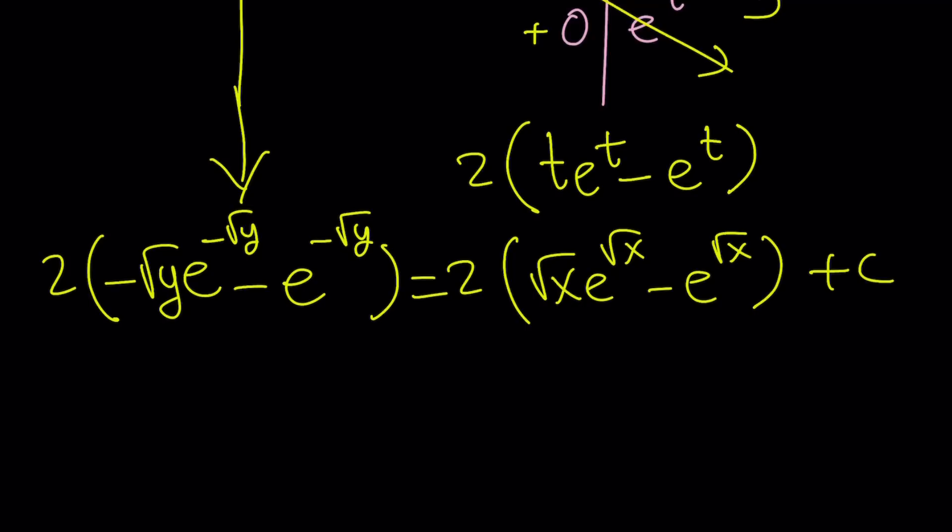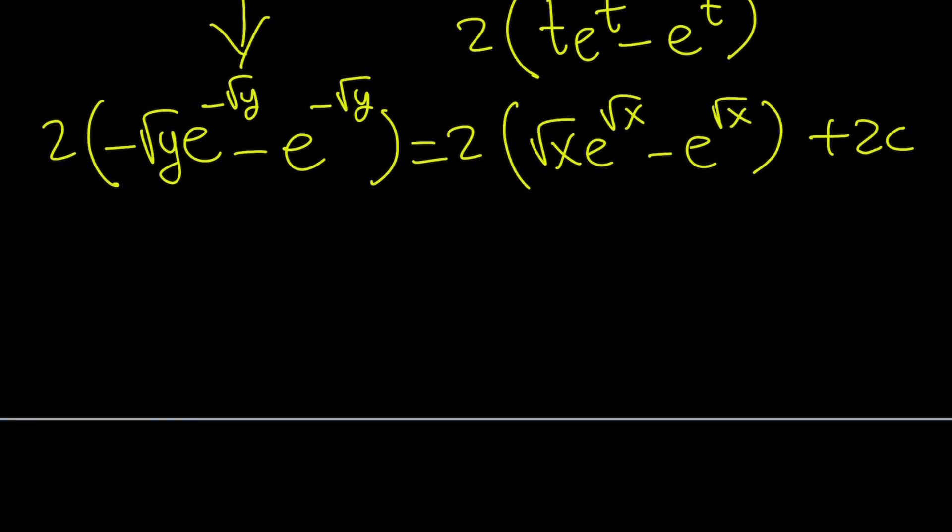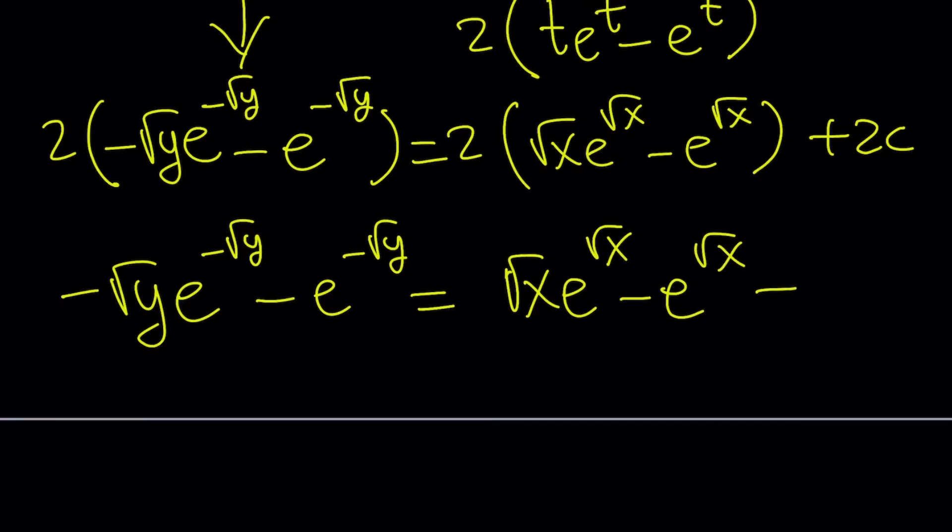By the way, c can be called 2c. Instead of c, we can write 2c because 2c is also constant. So divide everything by 2 and you'll get a somewhat simpler equation. So this is what you're going to get after division by 2. You're going to get this. Awesome.